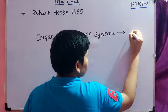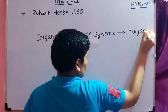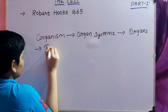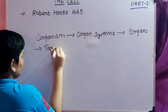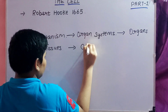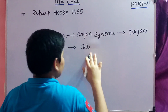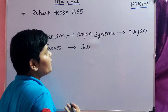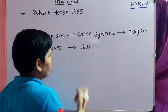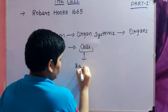Organ systems are made of organs. Organs are made up of tissues. And tissues are made up of cells. So if you take any organism, the cell is known as the basic unit.